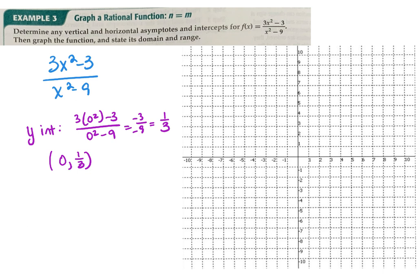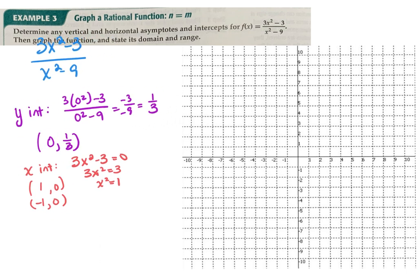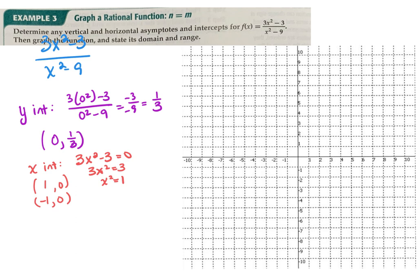For x-intercepts, that is when y equals 0, or equivalently when the numerator equals 0. Setting 3x squared minus 3 equal to 0, I add 3 and divide by 3 to get x squared equals 1. Taking the square root of both sides gives x equals 1 and x equals negative 1. So I have two x-intercepts at positive 1 and negative 1.